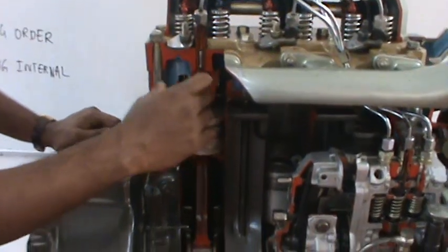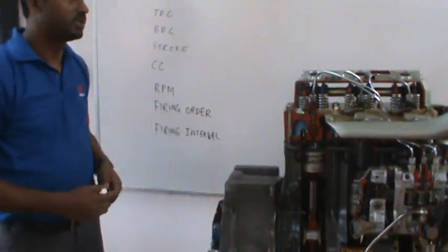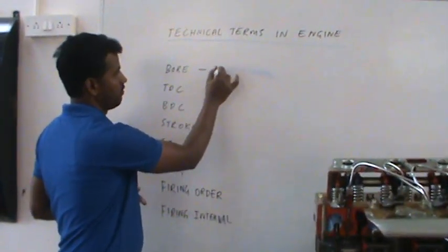this inner diameter of the cylinder is called as bore. This will be mentioned in millimeters. The bore of this engine is 105 millimeters.